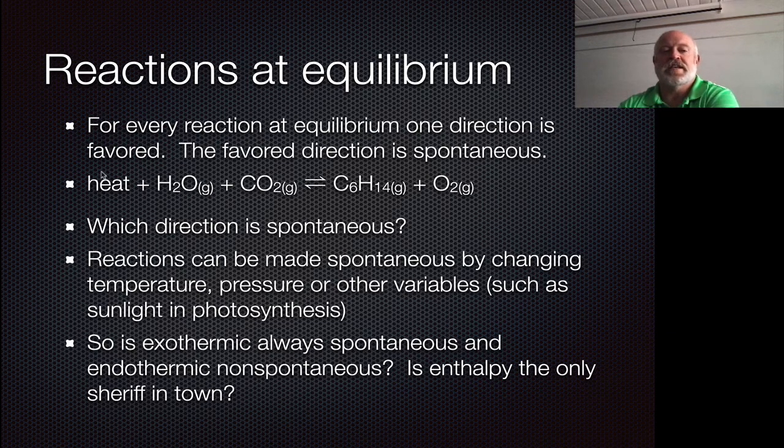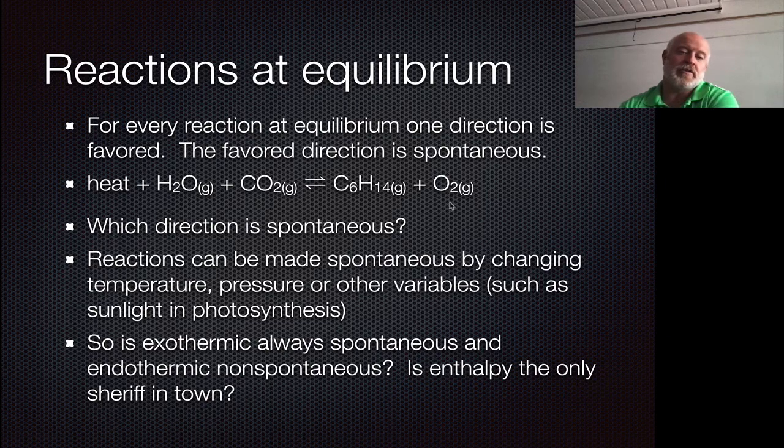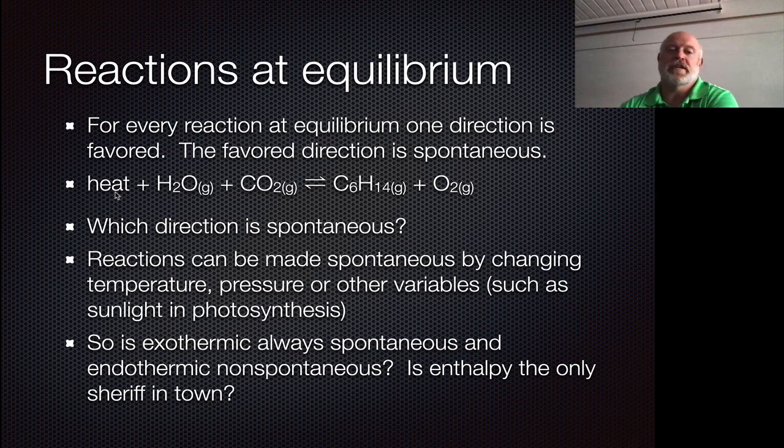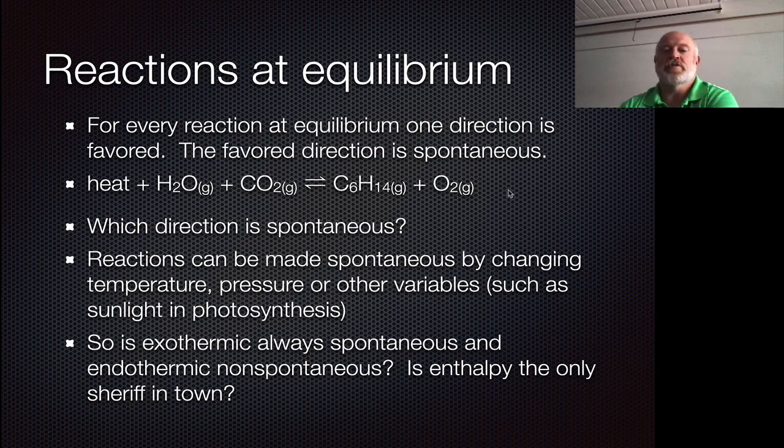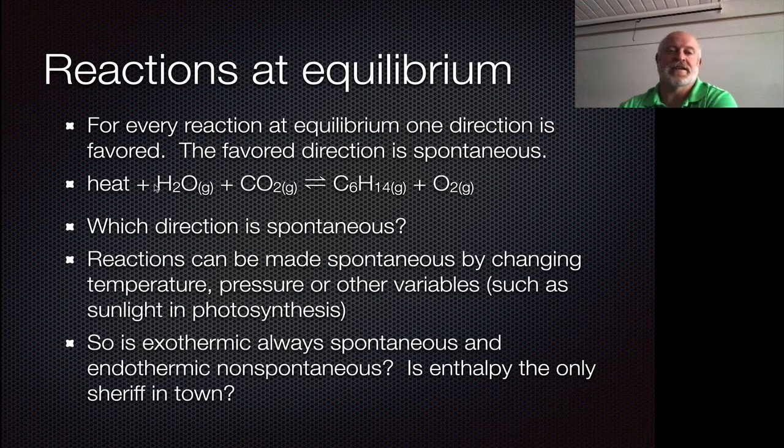So you could have something like heat energy plus water plus carbon dioxide making glucose and oxygen, or you could run it the other direction where glucose and oxygen produce carbon dioxide and water and heat. In all scenarios, one of these two directions, either the forward reaction like we normally talk about it, or even the reverse of that, could be spontaneous. And if one is spontaneous, the other is non-spontaneous.